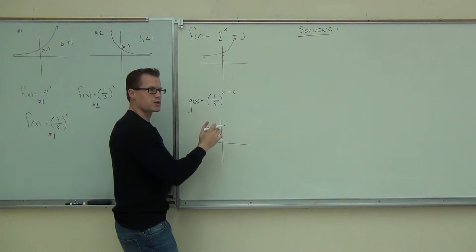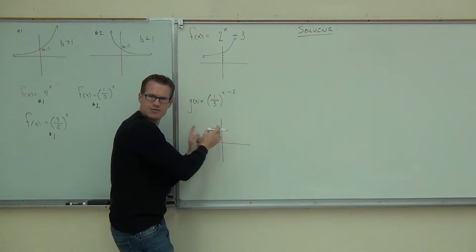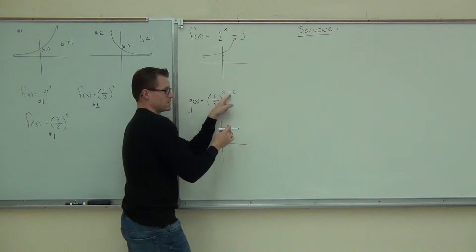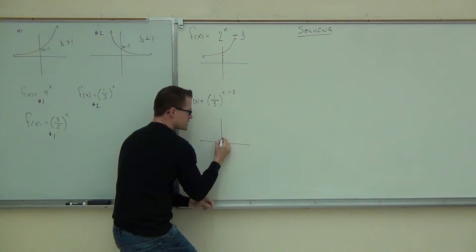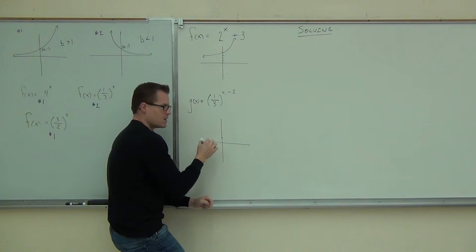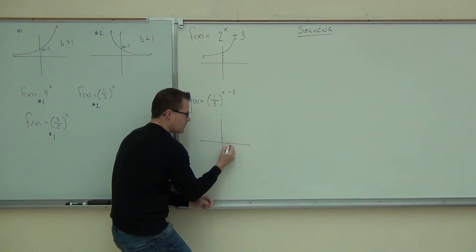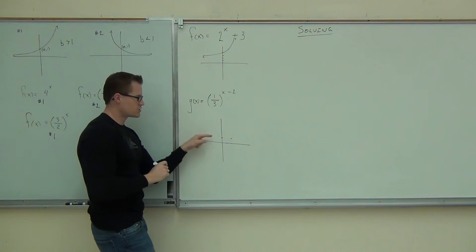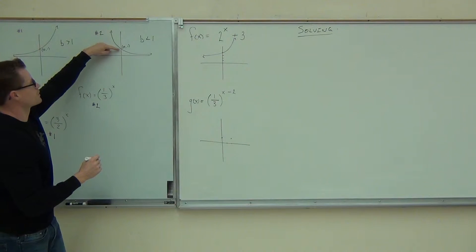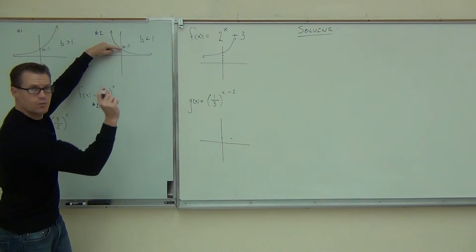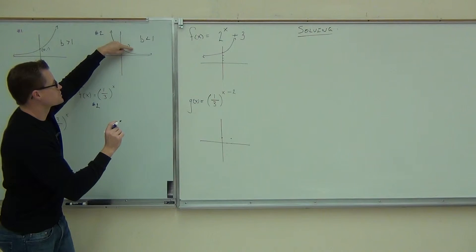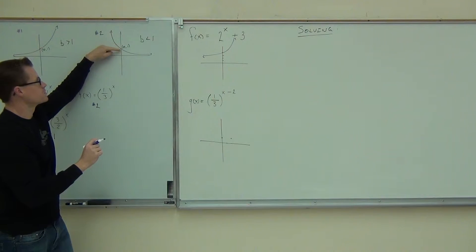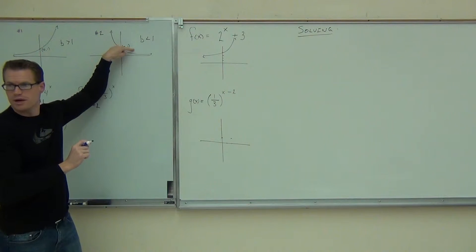So if it normally started here, remember, we're on this graph. If it normally started here, it's going to start later. It's going to start later. So this would shift two spots to the, what was it again, left or right? Right. Two spots right. So if we normally cross at (0, 1), check this out. If we normally cross at (0, 1), we're now crossing at (2, 1). Do you see why we're crossing at (2, 1)?